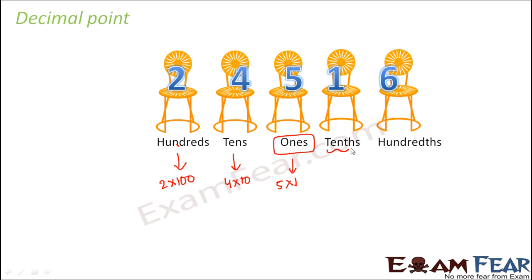What about 10ths and 100ths? These are written on the right-hand side of 1's, which shows that 10ths and 100ths are smaller places than 1's. Please observe the difference — it is not 10's, it is 10ths. Similarly, this is not 100's, it is 100ths. So the moment we are talking about places smaller than 1's, you use terms like 10ths, 100ths, 1000ths, and so on.